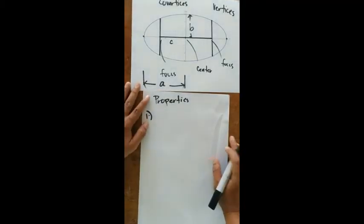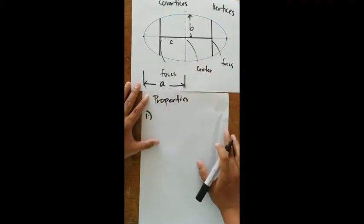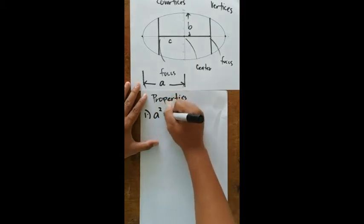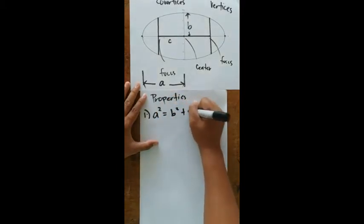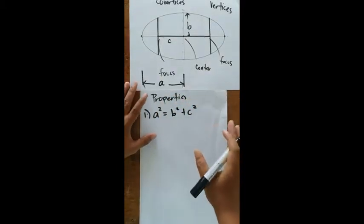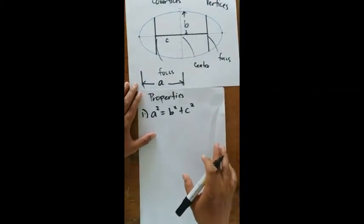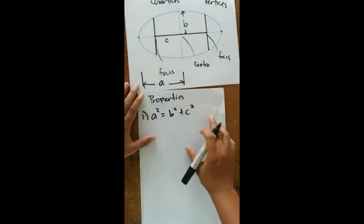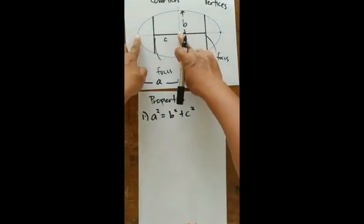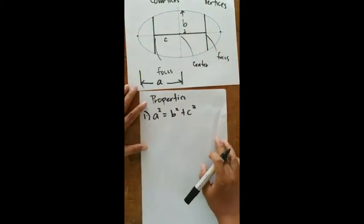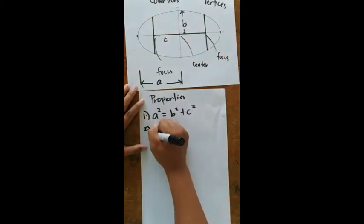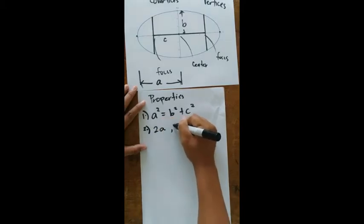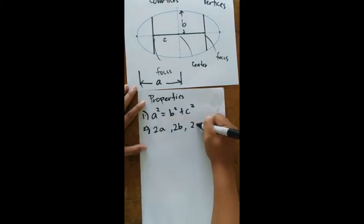Now let's look at the properties of the ellipse. The first property to remember is a² = b² + c². This resembles the Pythagorean theorem, except that the longest length here is 'a', which is the longest part of the ellipse.